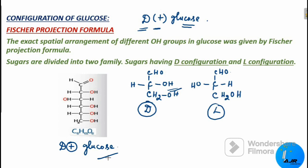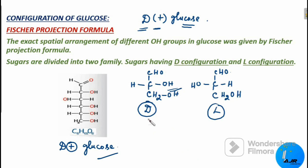The '+' sign indicates that the glucose solution rotates plane polarized light clockwise, making it dextrorotatory. Importantly, 'D' has nothing to do with the optical activity of the compound. Well, I hope you have understood what was taught today. In the next session, we will cover the cyclic structure of glucose. Until then, this is Dr. Anita Raj, your chemistry mentor, signing off. Thanks for watching.